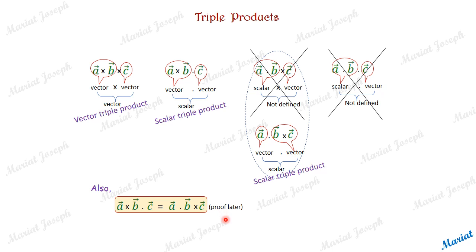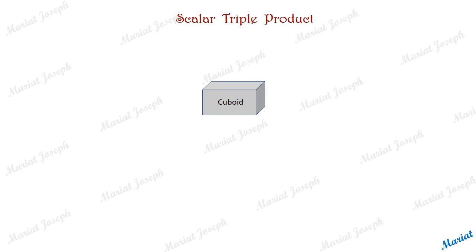Now let's see the geometrical significance of the scalar triple product. Look at this figure — it is a cuboid. A cuboid has all faces as rectangles, a very familiar figure.